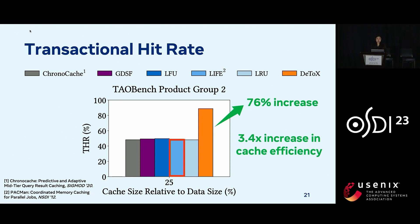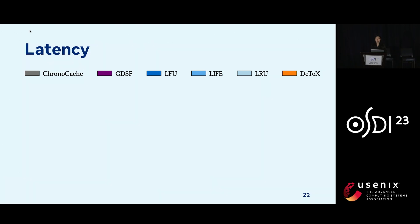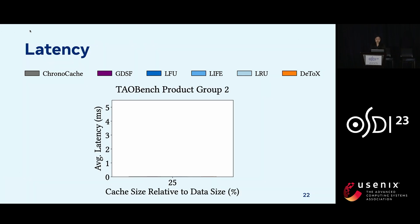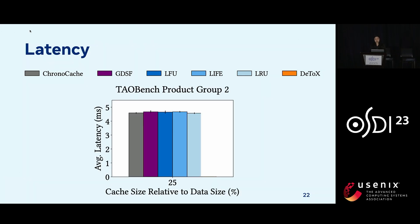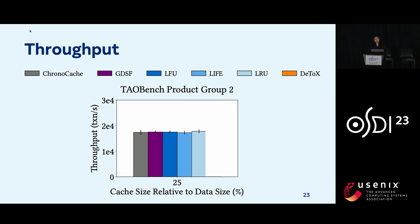These wins in transactional hit rate translate into latency improvements. In terms of average latency, we're able to decrease latency from 4.5 milliseconds compared to the baselines to 3 milliseconds, representing a 30% decrease. By decreasing latency, we're also able to increase throughput on the system, and we see a 30% increase in throughput.